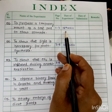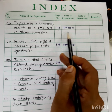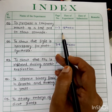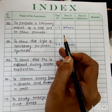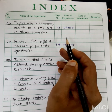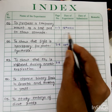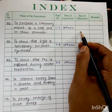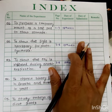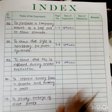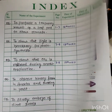Here you have to write the date of the experiment — the date on which you performed it. Don't copy this, because it may vary. And this is the date of submission, meaning when you are submitting your experiment to your teacher. These remarks columns are for the teacher's use. So this is the index page.